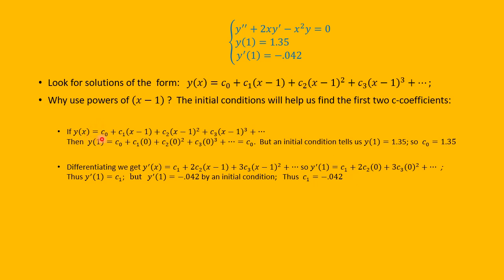If we plug x = 1 into the series y(x) = c₀ + c₁(x−1) + c₂(x−1)² + ..., then every term after the first contains a factor of (1−1) = 0, so y(1) = c₀. Since we know y(1) = 1.35, we immediately get c₀ = 1.35.